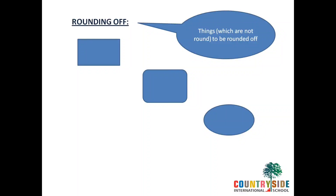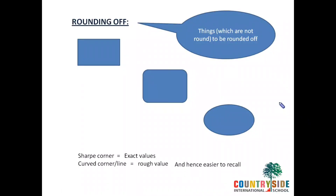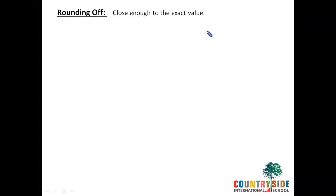This is just an imaginative definition which comes to my mind. Maybe it will help you remember what exactly the term 'rounding off' means. Rounding off is not the exact value of the number — it is a nearer or closer value to the number, and hence you can easily recall it. That's why we round off the exact value to a rough value. So the exact definition of rounding off is a value that is close enough to the exact value.